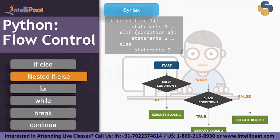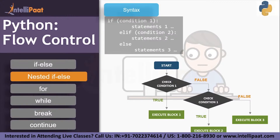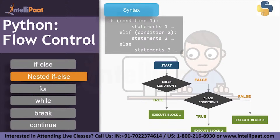Start by checking condition one. If condition one is true, then the block inside the if block is executed — that is, execute block one. If the first condition is false, then go and check the second condition, the else-if condition. If the else-if condition is true, then block two is executed. If none of them are true, then finally the else block is executed — that is, execute block three. Remember: there is no condition associated with the else block; it only executes if all the above conditions are false.